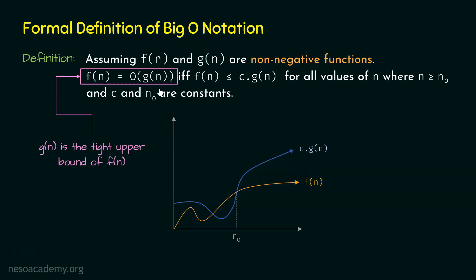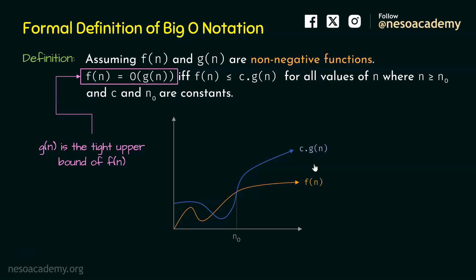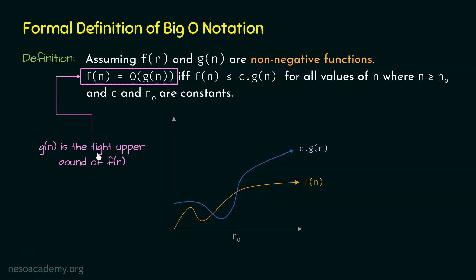G(n) is also called the tight upper bound of F(n). An upper bound means that after some point N₀, the growth rate of G(n) must be greater than that of F(n) — F(n) cannot grow more than G(n) after N₀. The meaning of tight upper bound will become clear once we discuss some problems based on Big O Notation in the next lecture.